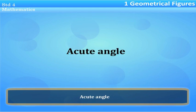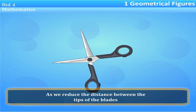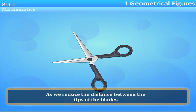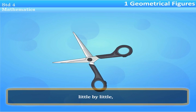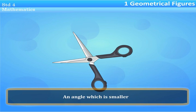Acute angle: as we reduce the distance between the tips of the blade little by little, the angle between the blades grows smaller than a right angle. An angle which is smaller than a right angle is called an acute angle.